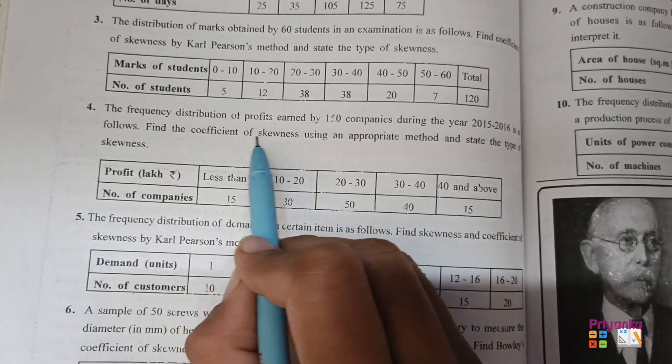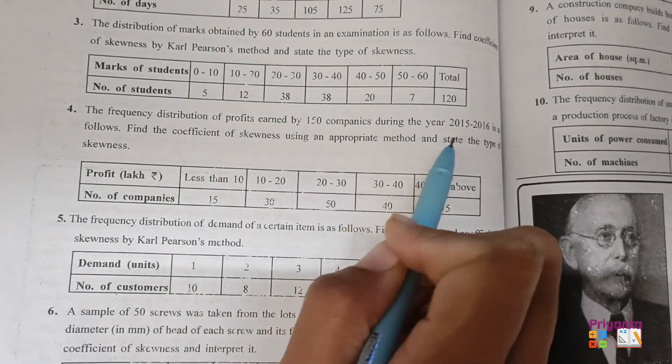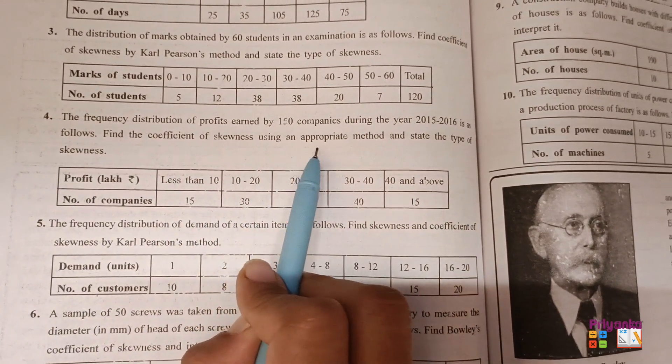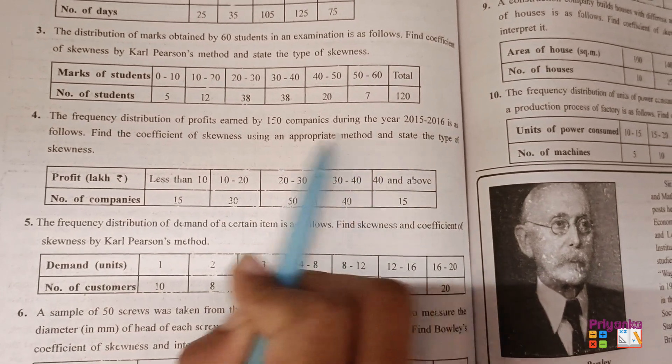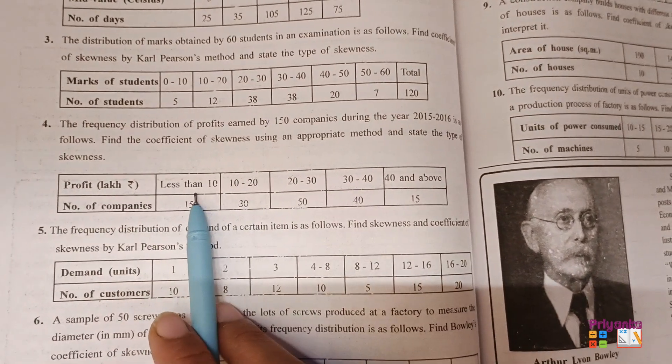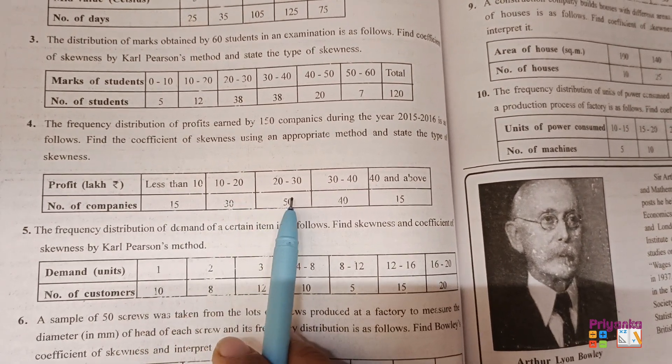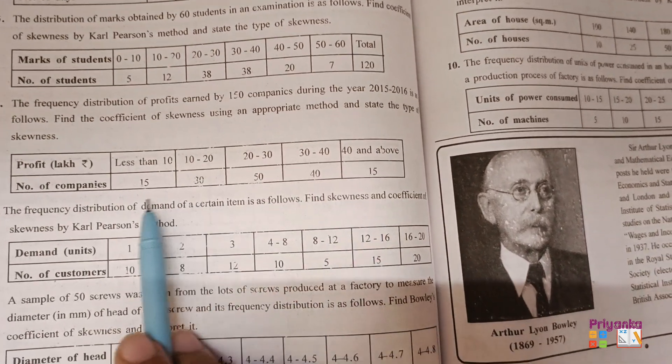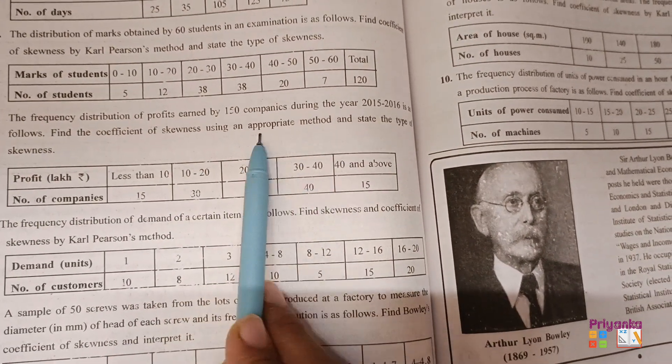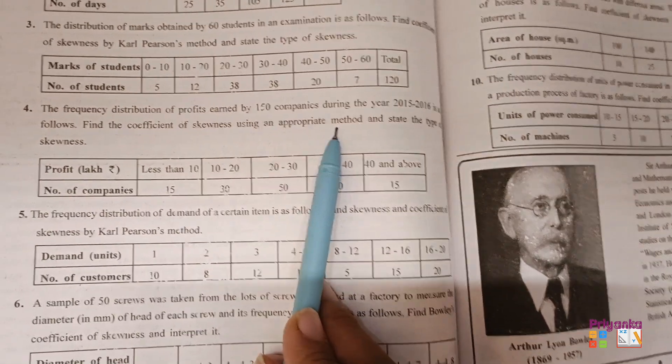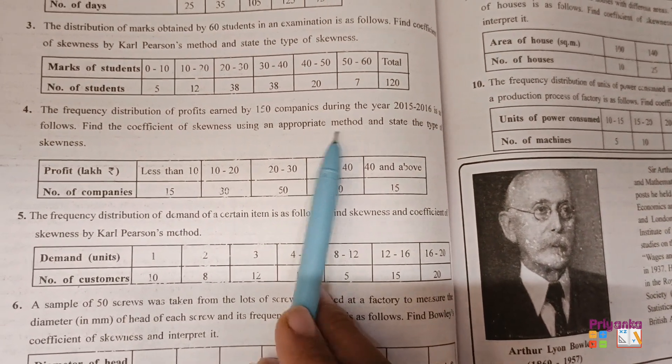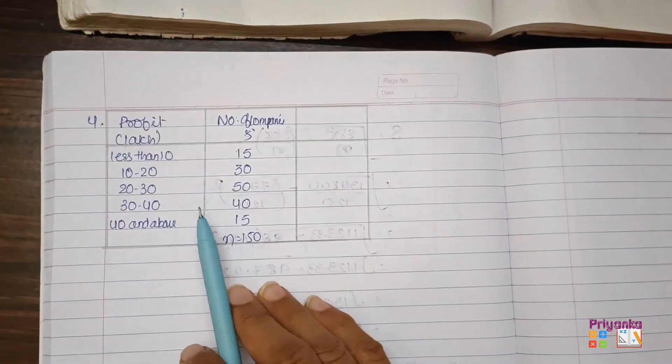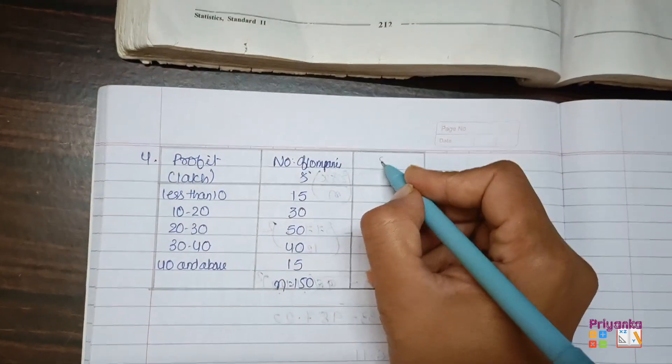Next, question number 4. The frequency distribution of profit earned by 150 companies during the year 2015-16 is as follows. Find the coefficient of skewness using appropriate method and state the types of skewness. Now here we can see less than 10, 10 to 20, 20 to 30, 30 to 40 and 40 and above. Even we can see the frequency is given. Now, appropriate method means that we have a choice whether to use Carl Pearson method or Bowley's method.